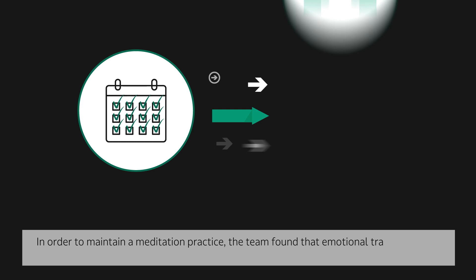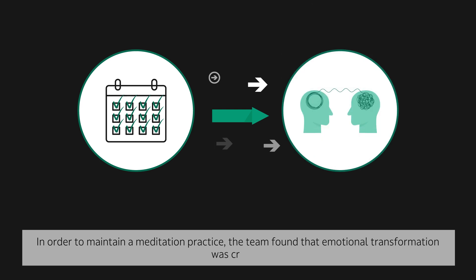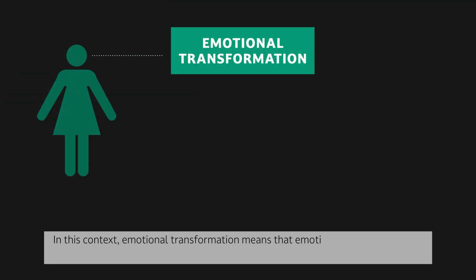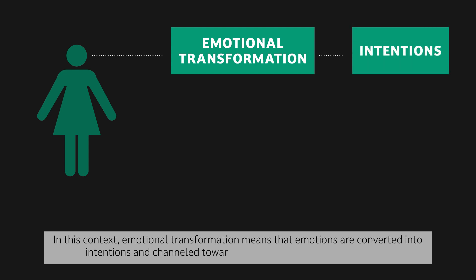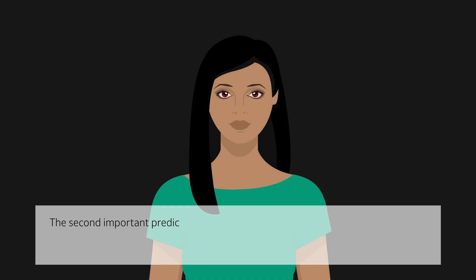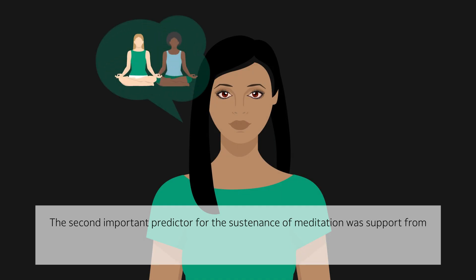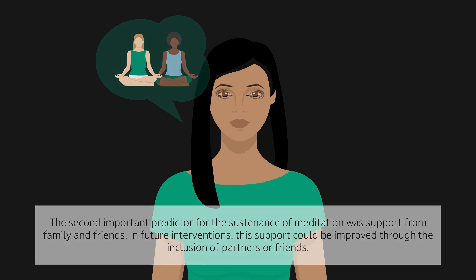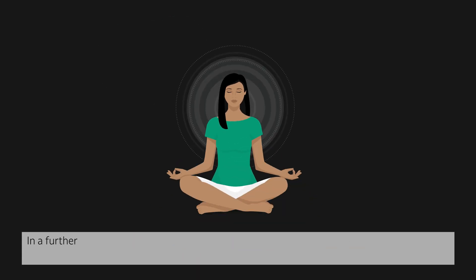In order to maintain a meditation practice, the team found that emotional transformation was critical. In this context, emotional transformation means that emotions are converted into intentions and channeled toward meditation and self-improvement. The second important predictor for the sustenance of meditation was support from family and friends. In future interventions, this support could be improved through the inclusion of partners or friends.